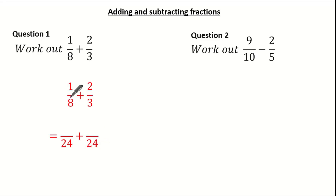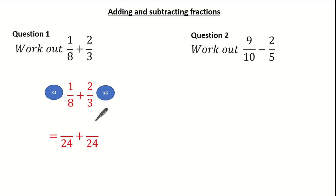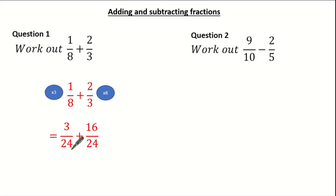But what do I do to this denominator 8 to make 24? I multiply by 3. And what do I do to this denominator 3 to make a denominator 24? I multiply by 8. So using our knowledge on equivalent fractions, I multiply the 1 by 3 to give me 3, the 8 by 3 to give me 24, the 2 by 8 to give me 16, and the 3 by 8 to give me 24. Now my denominators are the same, giving me a final answer of 19 over 24.